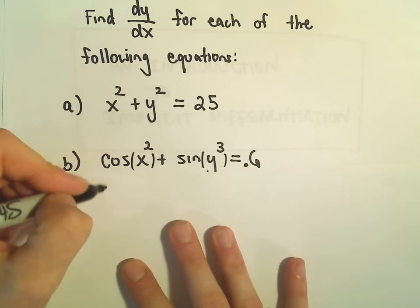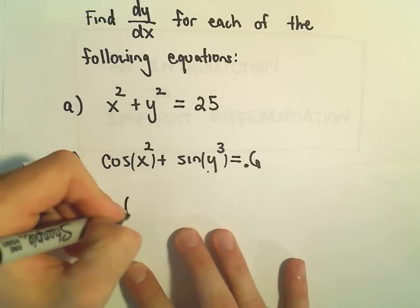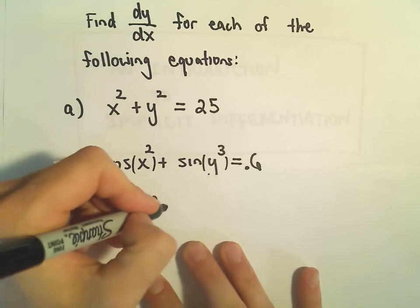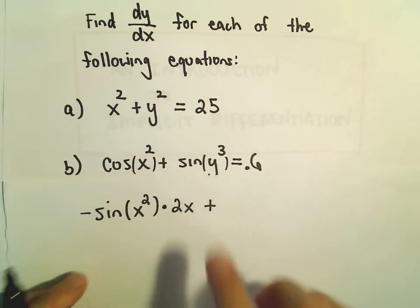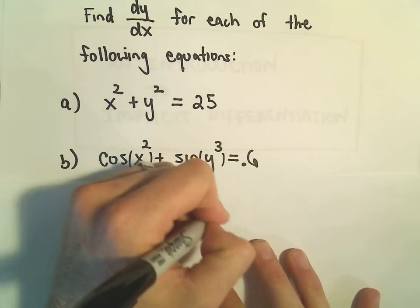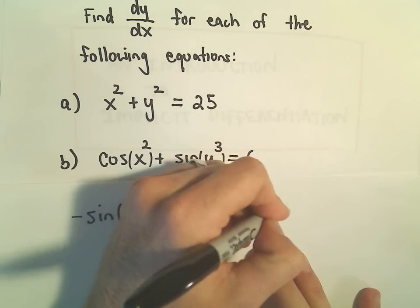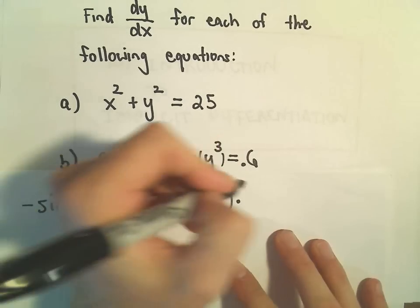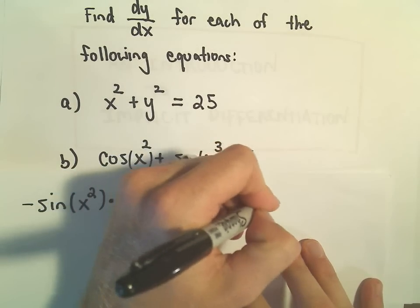The derivative of cosine of x squared — when we do the derivative of cosine, we get negative sine. We leave the inside alone, and then we take the derivative of the inside, which will just be 2x. Then we do the derivative of sine of y cubed. The derivative of sine is cosine; we leave the inside alone, and when we take the derivative of y cubed, we just get 3y squared.